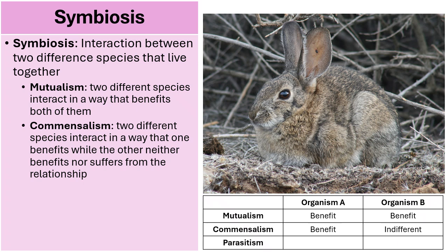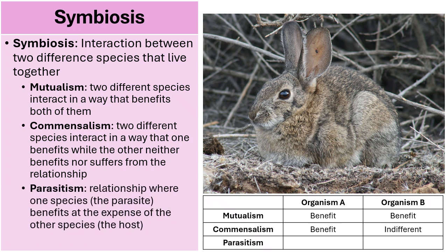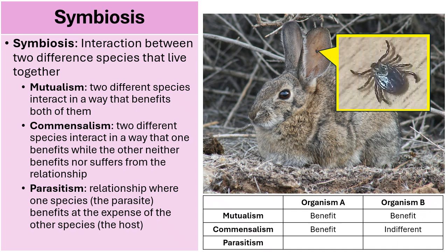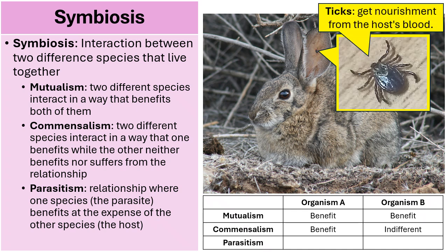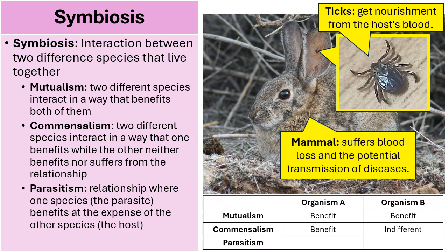The final type of symbiosis is parasitism — a relationship where one species, the parasite, benefits at the expense of the other species known as the host. A great example is a tick on the ear of a rabbit. The tick gets nourishment from feeding on the blood of the host, while the rabbit suffers blood loss and the potential transmission of diseases that may be spread from the tick's bite. One benefits and the other is harmed.